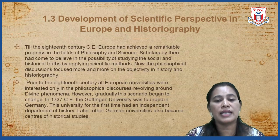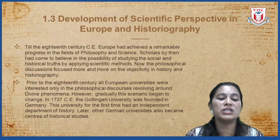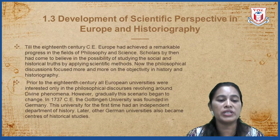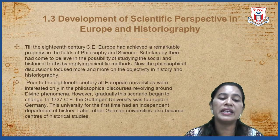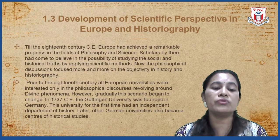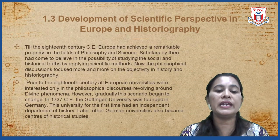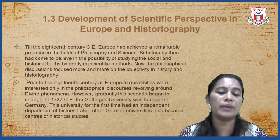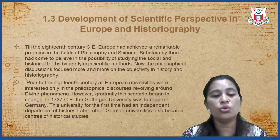However, gradually this scenario began to change, and in 1737 CE the Gottingen University, founded in Germany, for the first time had an independent department of History. Later, other German universities also became centers of historical studies.